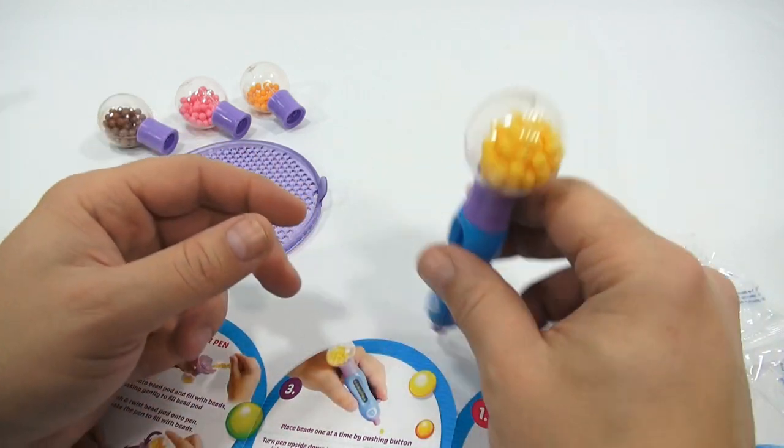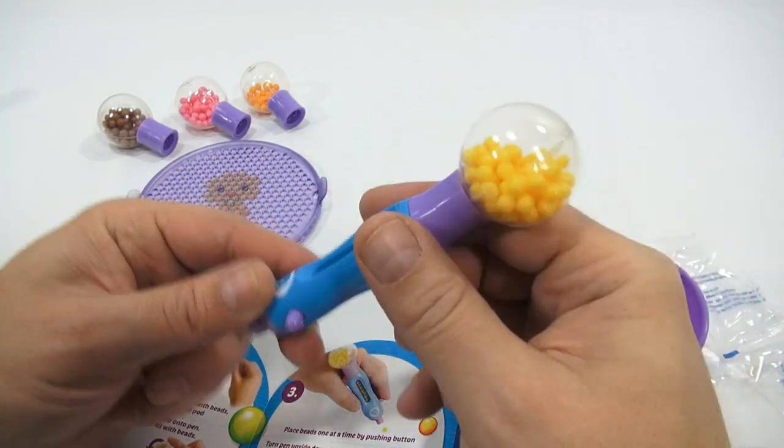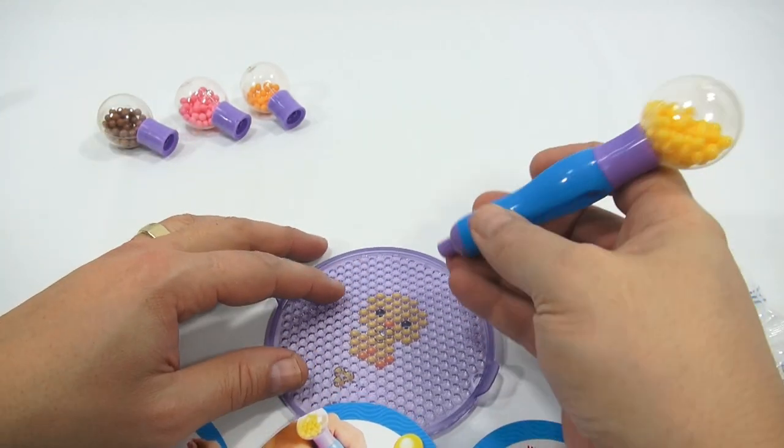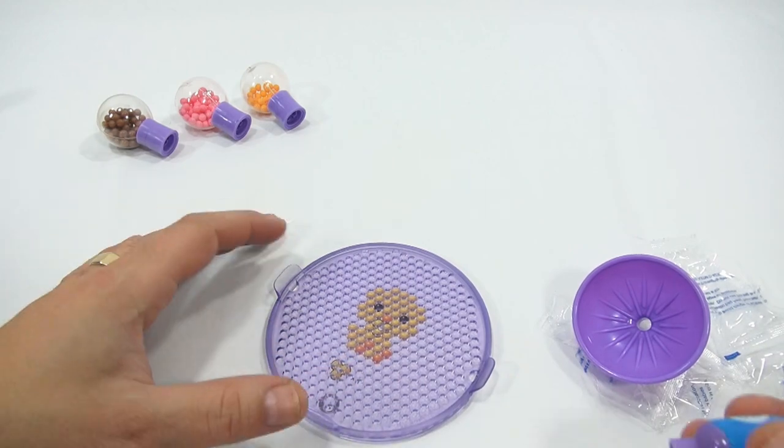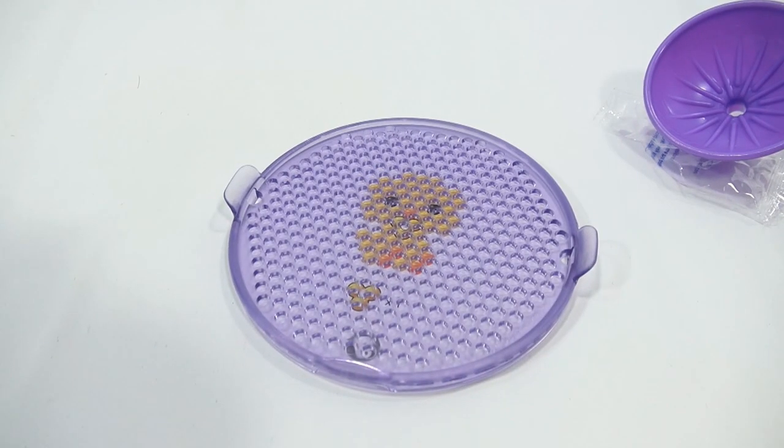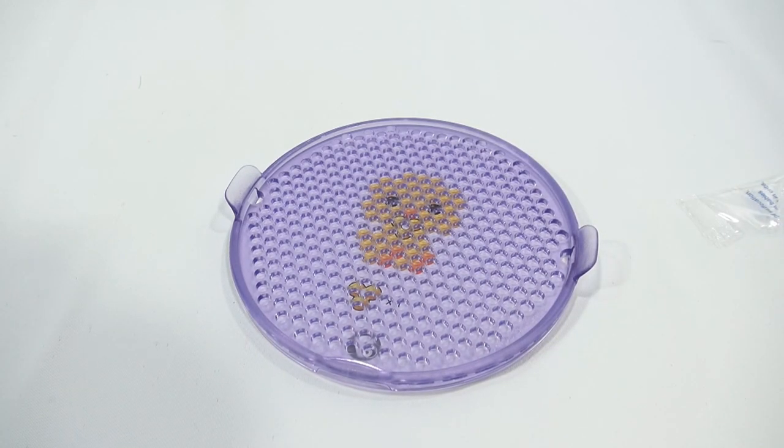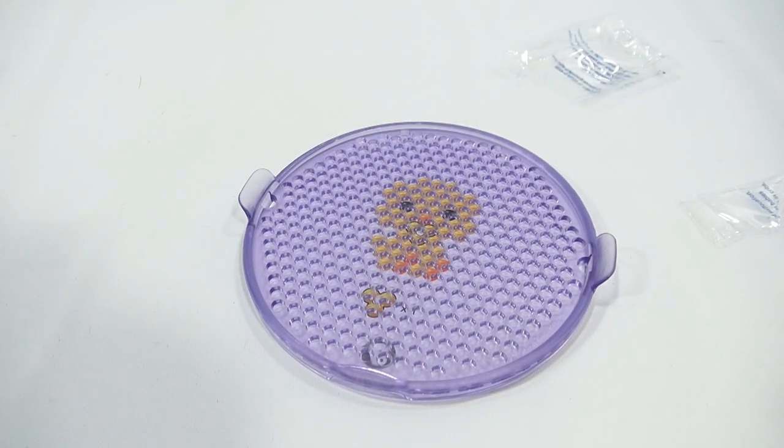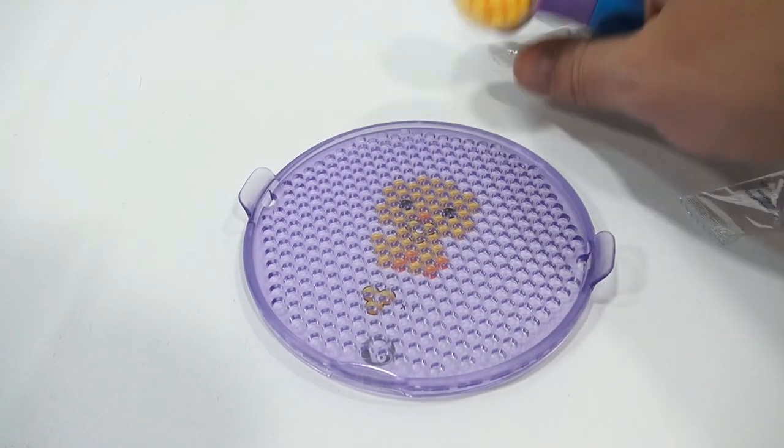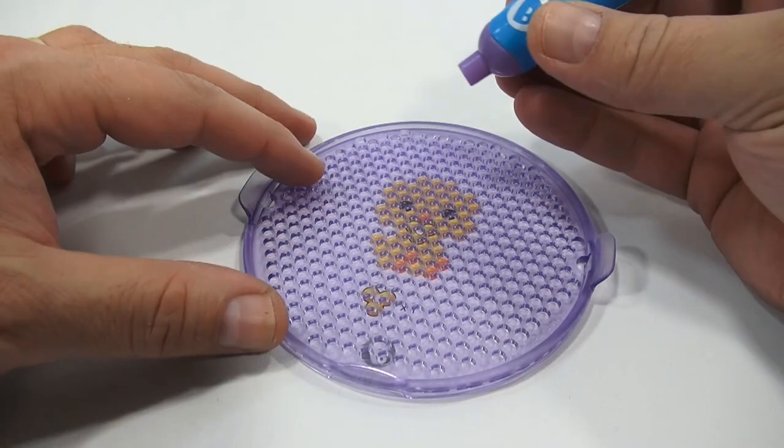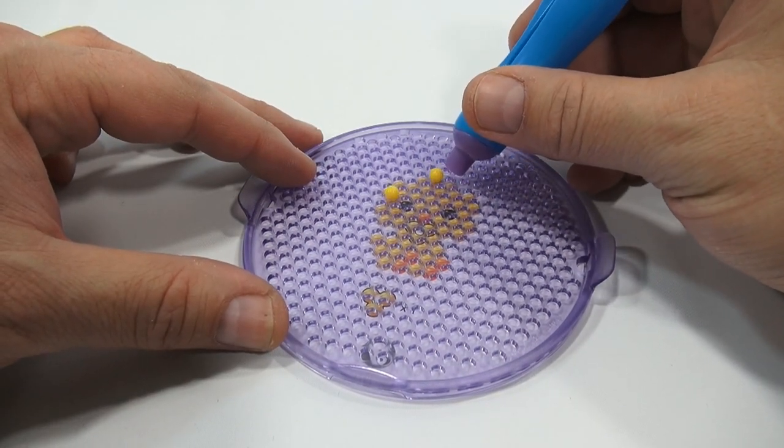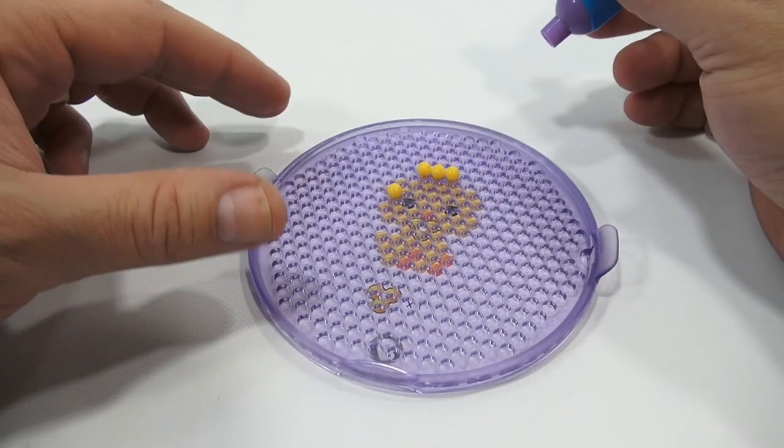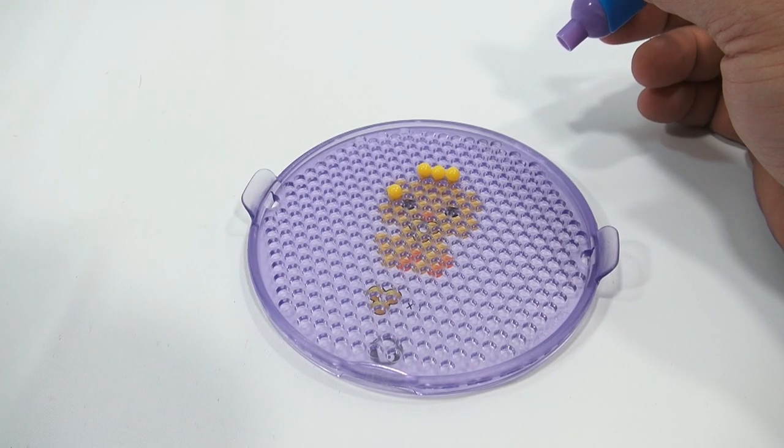I just pushed. Shake the pen to fill the beads. See, now they're launching in there. Place beads one at a time by pushing button. Here we go. Is it going to work for me? Oh, look at that. I left three yellows in. Wasn't paying attention.